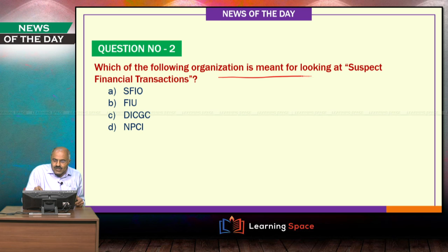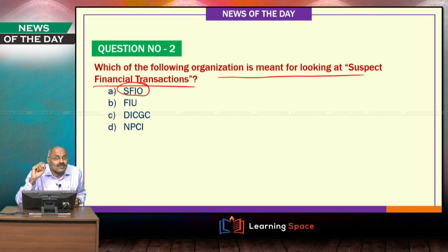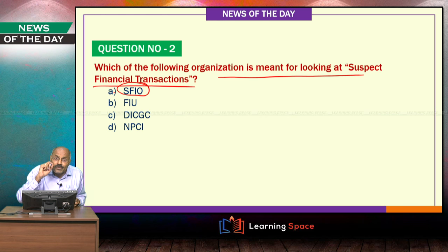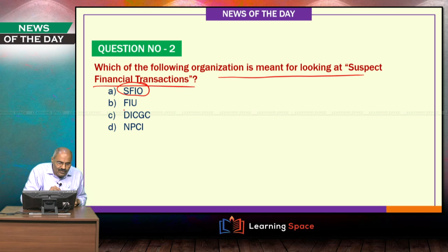Which organization is meant for looking at suspect financial transactions? Here are four organizations: SFIO — Serious Fraud Investigation Office — is under the Ministry of Corporate Affairs and looks at big corporate frauds. Financial Intelligence Unit (FIU) handles suspicious financial transactions, for example if you are depositing 1 crore rupees in a bank — that is a suspicious financial transaction going to FIU, which is under the Ministry of Finance. The right answer is FIU.